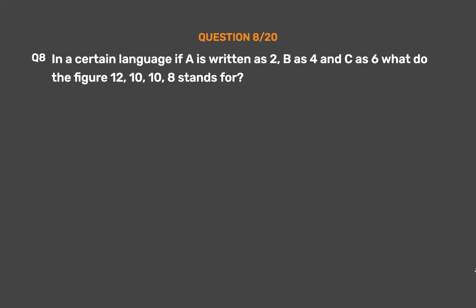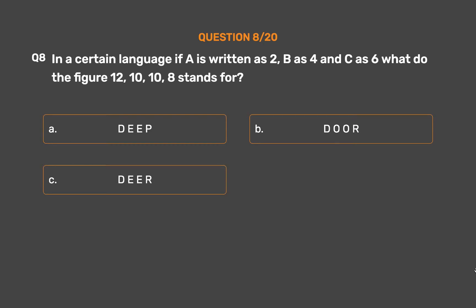Question number 8: In a certain language, if A is written as 2, B as 4, and C as 6, what do the figures 12, 10, 10, 8 stand for? Option A: DEEP. Option B: DOR. Option C: DER. Option D: FED.